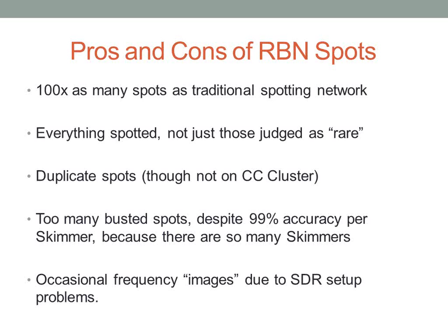We had some problems about a year ago with frequency images due to setup problems in various software-defined receivers, particularly the simple ones. These images would show up as signals way off where they should be. For example, if somebody was transmitting at 14.025 and the center frequency was 14.045, there would suddenly be a signal at 14.065 — the same distance from center but on the opposite side. The CT1BOH filters take care of that as well. So we think we've got frequency accuracy and decoding accuracy fairly well under control now.